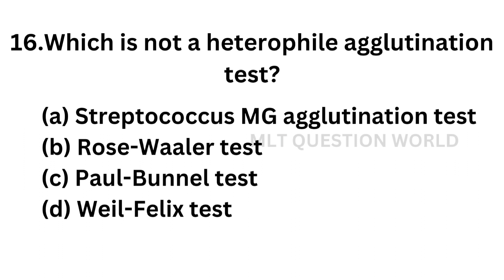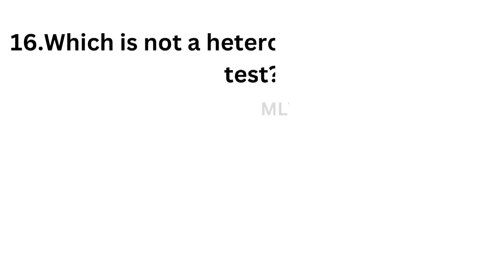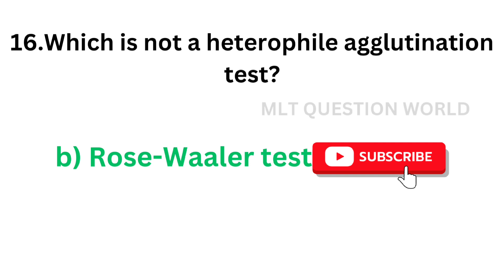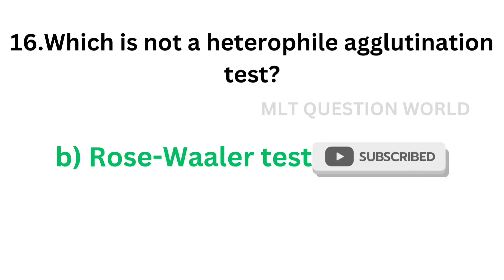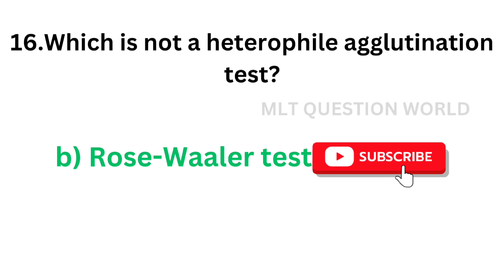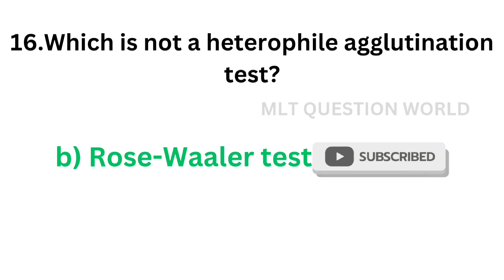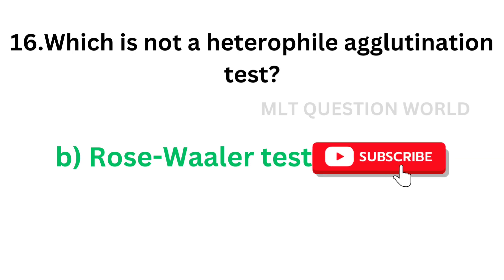Question number 16. Which is not a heterofile agglutination test? Option A, Streptococcus MG agglutination test; Option B, Roseweiler test; Option C, Paul-Bunnell test; Option D, Weil-Felix test. The correct answer is Option B, Roseweiler test. Roseweiler test is not a heterofile agglutination test; it is a test for rheumatoid factor.